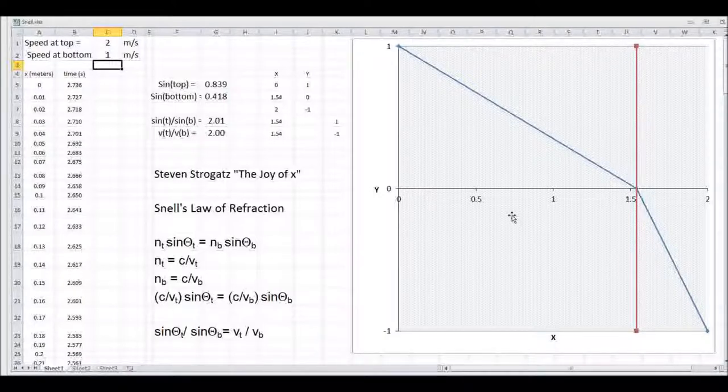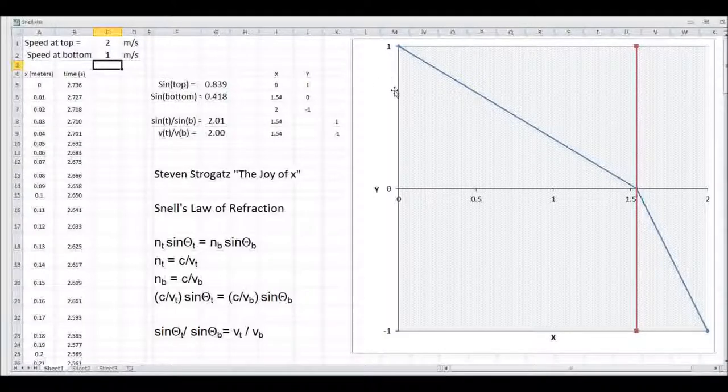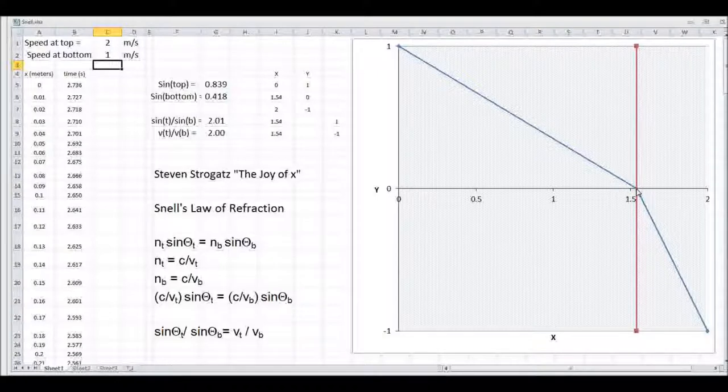And in finding the path for the shortest time between these two points makes the distance in the top field longer and the distance in the bottom field shorter so as to minimize the time.